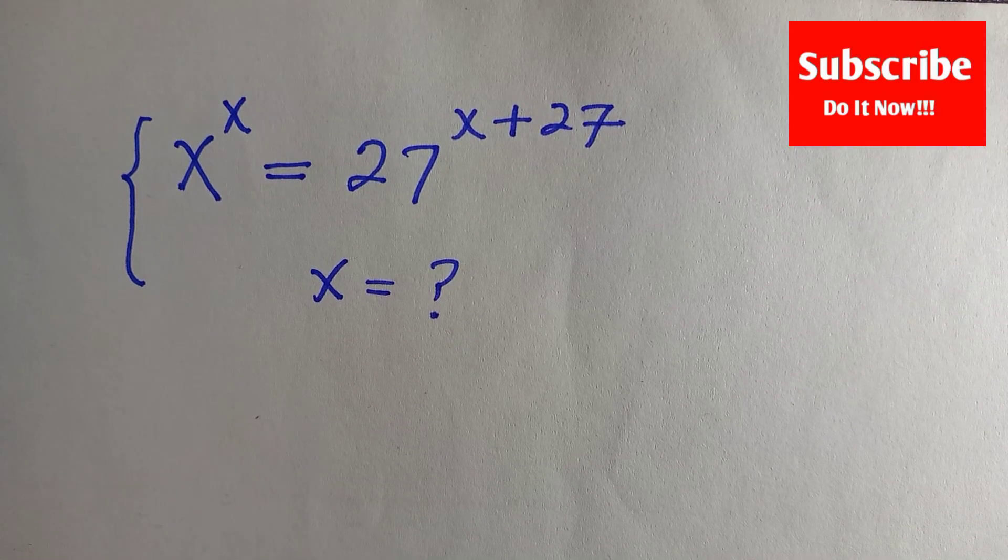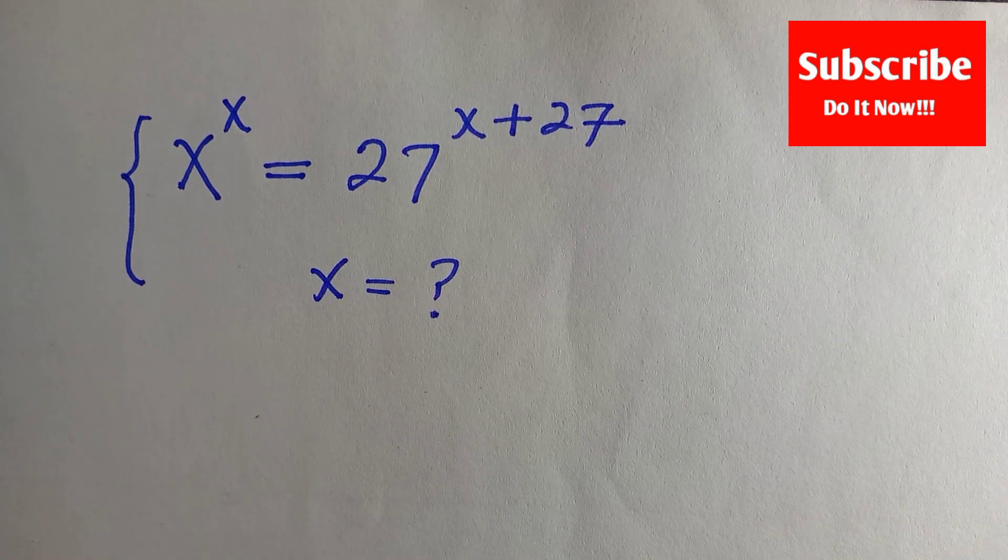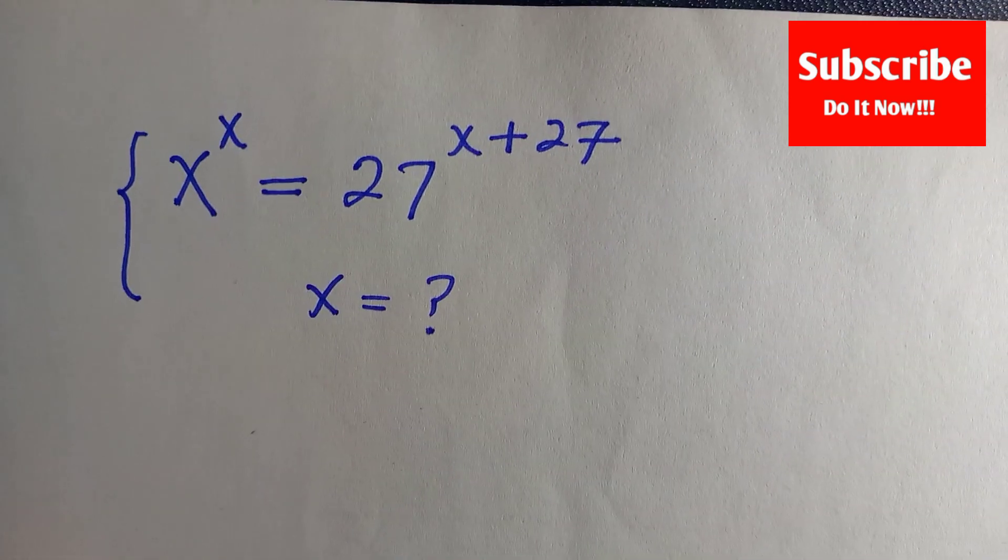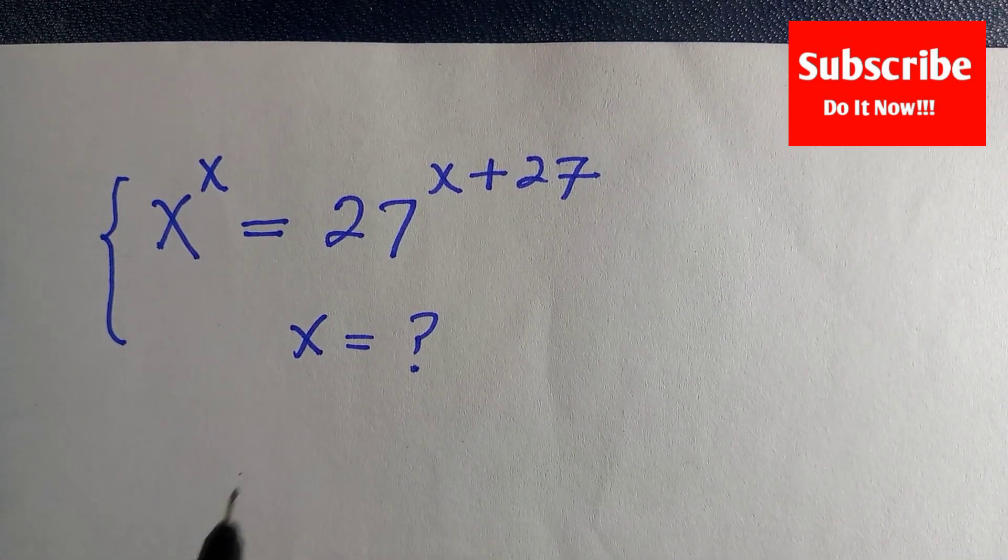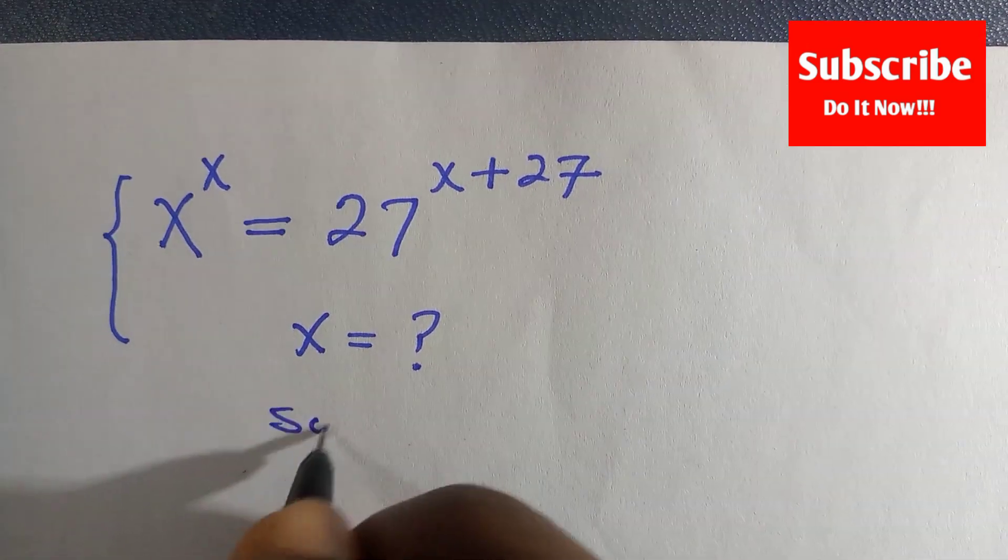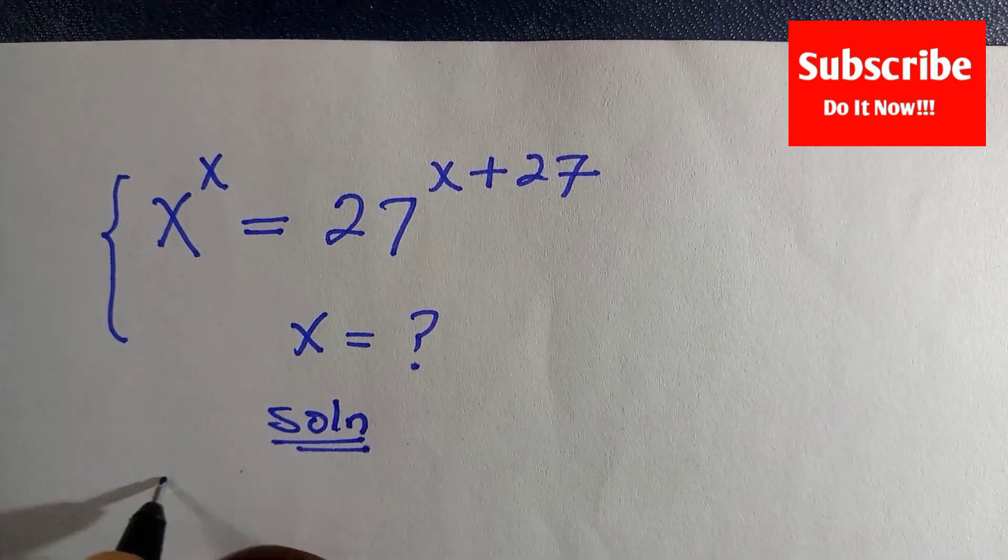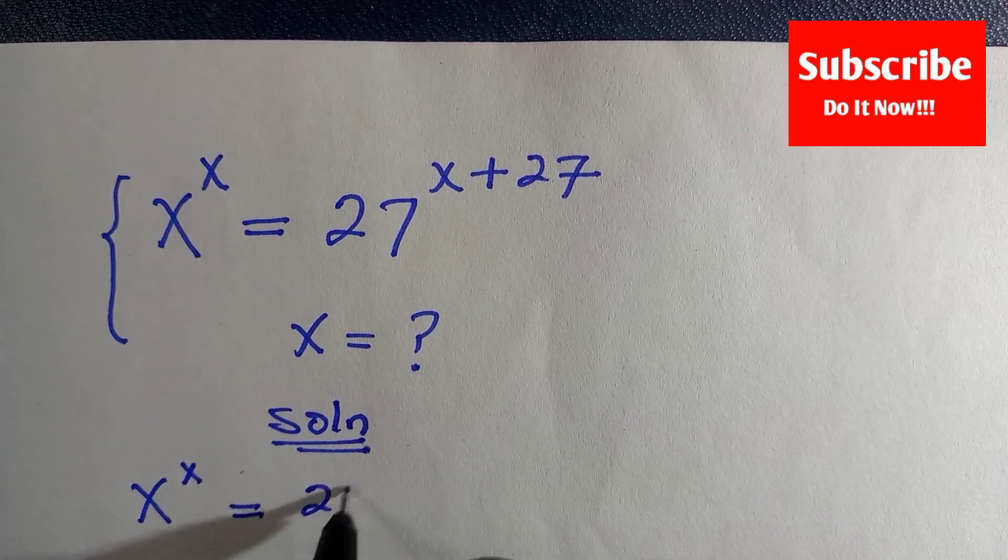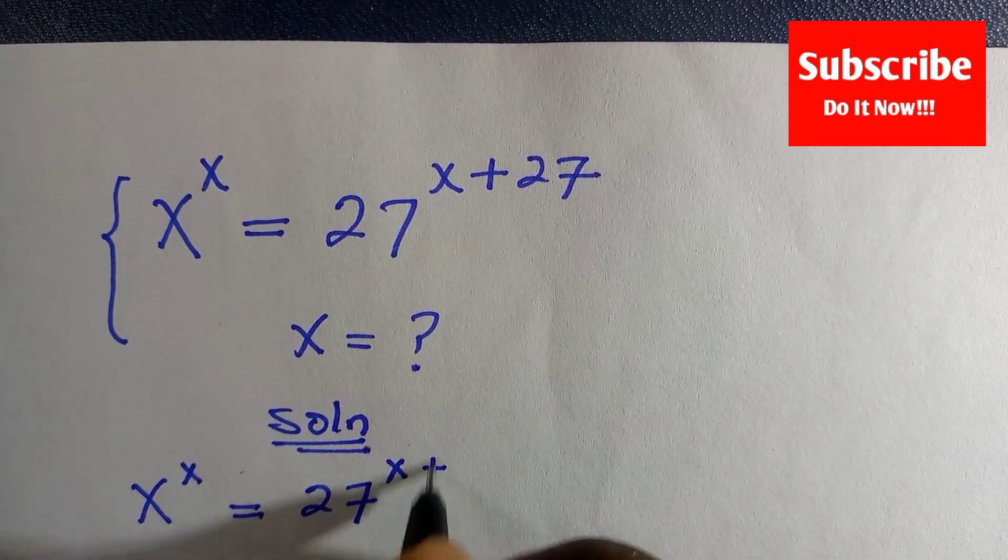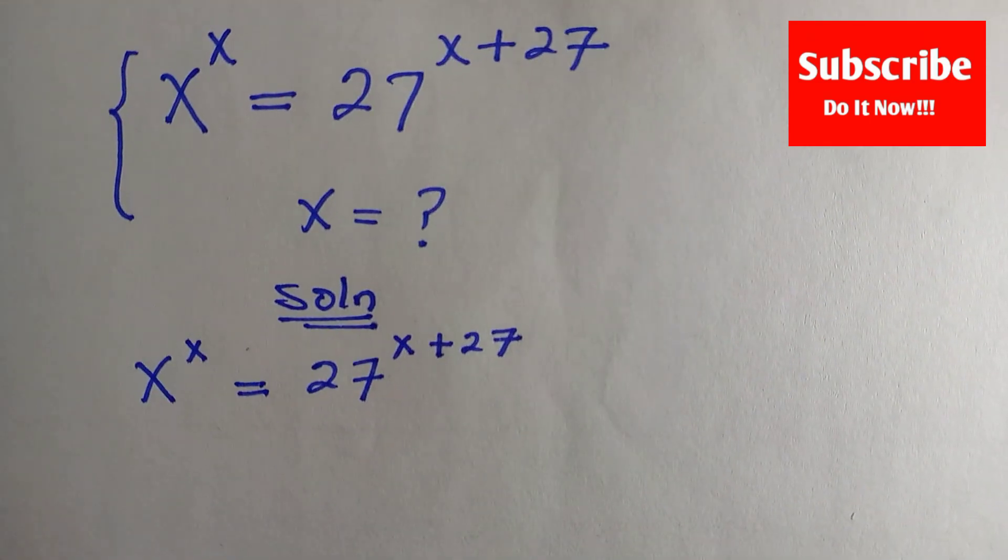Good day viewers, I welcome you all to this class. Let's solve this problem. The question is x^x = 27^(x+27). We are going to rewrite the solution, rewriting the question as x^x = 27^(x+27).